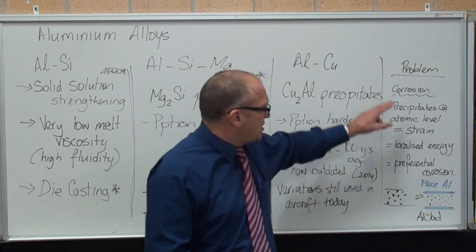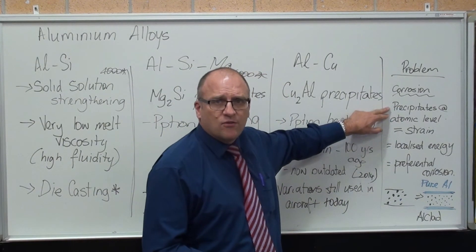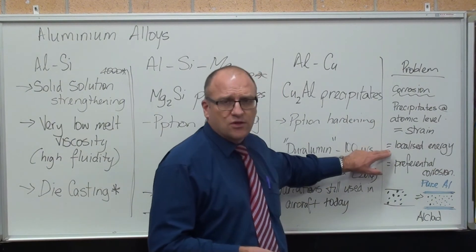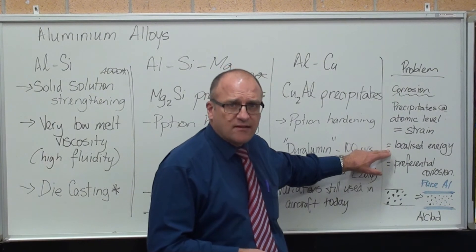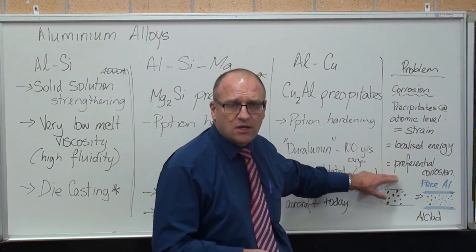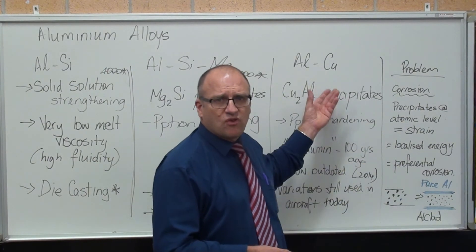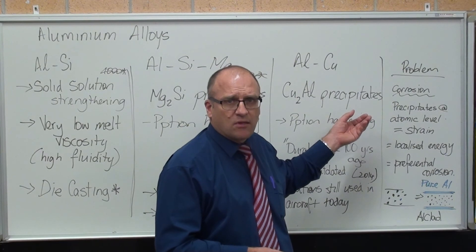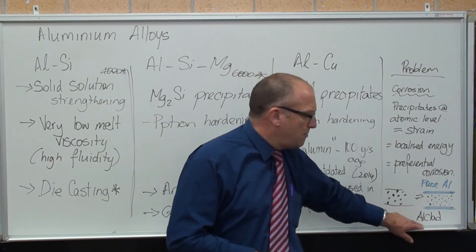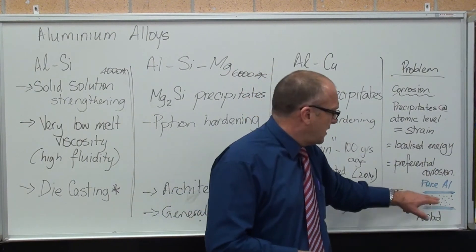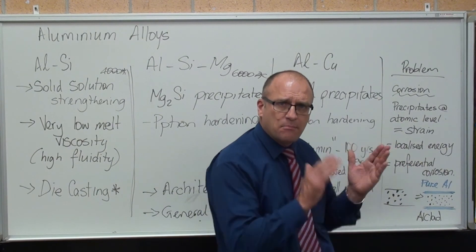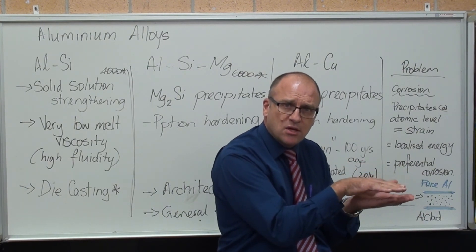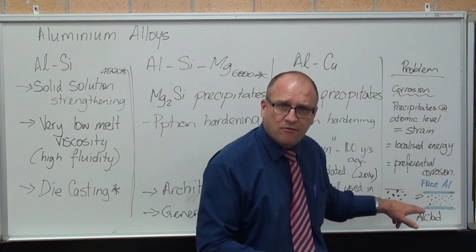The issue with aluminium copper alloys is that the precipitates at the atomic level cause strain. Put this on high definition and you'll definitely see the image on the screen. The strain introduces localised areas of high energy, which introduces preferential corrosion. If you use straight aluminium copper alloys in an aircraft, you are susceptible to corrosion — not ideal when flying. The solution is a product called ALCLAD: the precipitation-hardened metal has pure aluminium physically bonded on both surfaces, giving corrosion resistance without preferential corrosion.